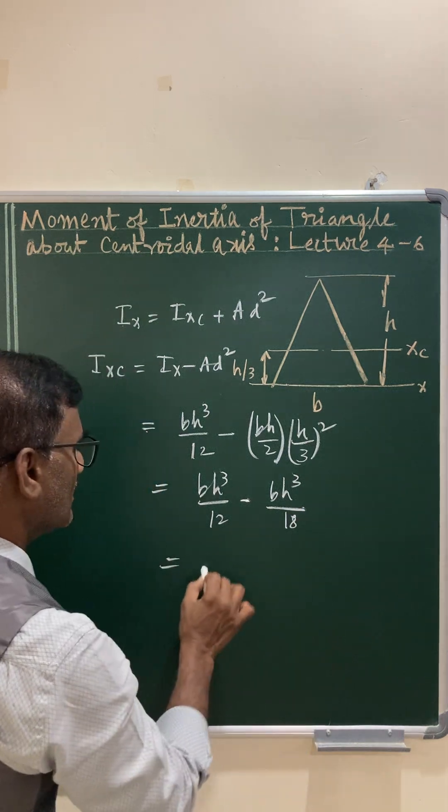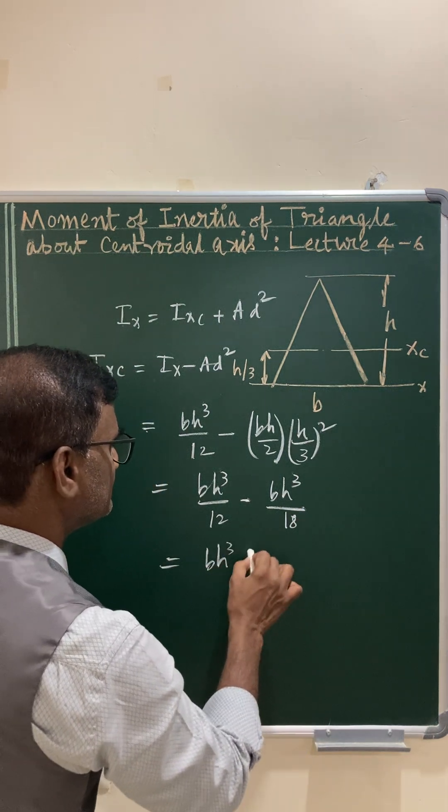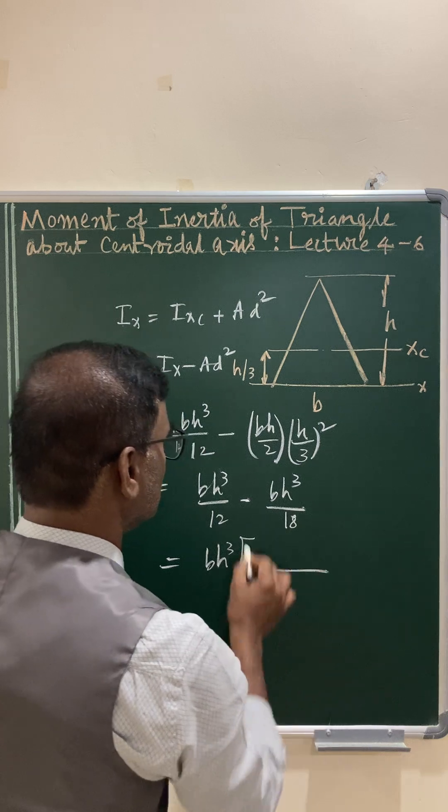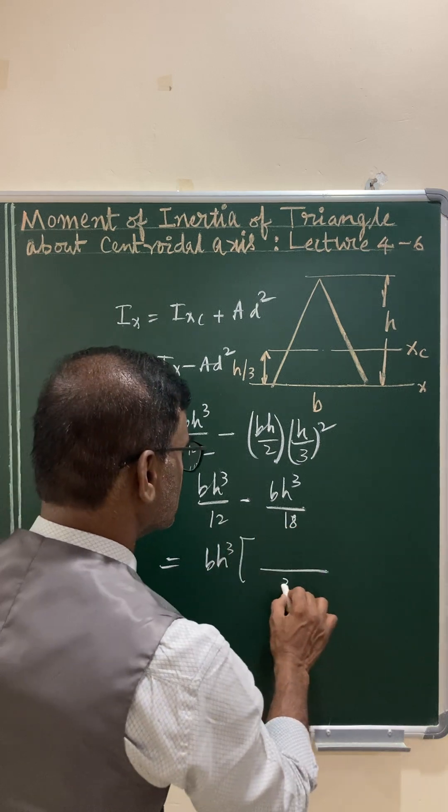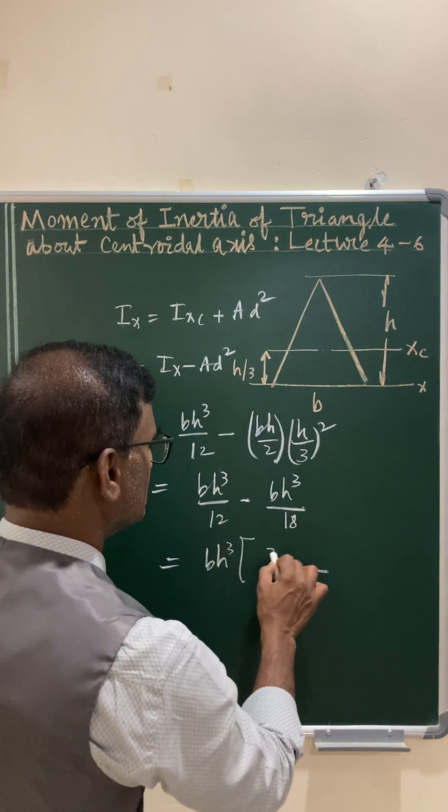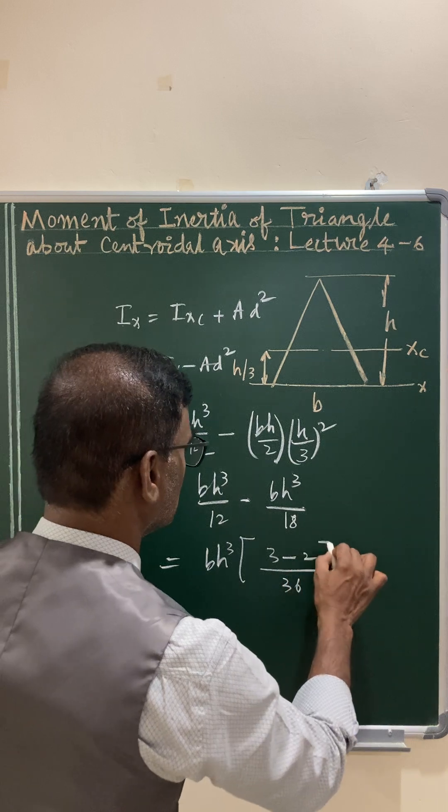You can write this as bh³ times, the LCM becomes 36, and 12 gives 3 times and 18 gives 2 times.